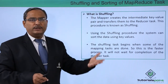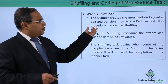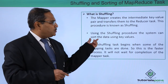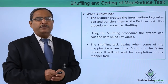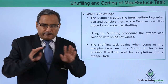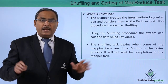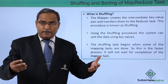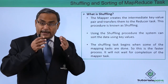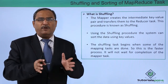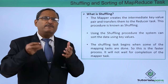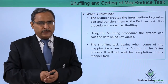What is shuffling? Using the shuffling procedure, the system can sort the data using the key values. We have a huge set of data that will be divided into smaller parts, and those parts will be assigned to the mappers. Mappers will be working on the working nodes, and the data set will be in the form of key-value pairs. Here, the key is actually denoting some file reference and the value is nothing but the data set.